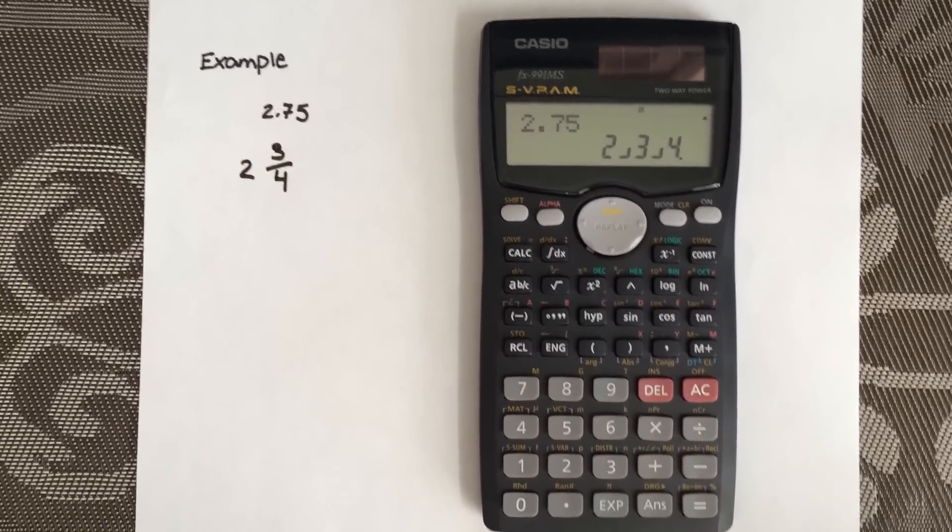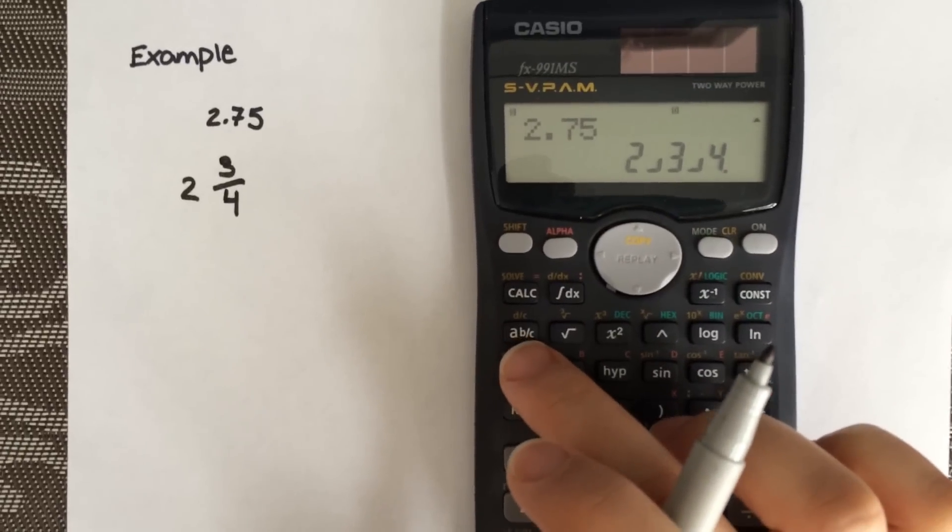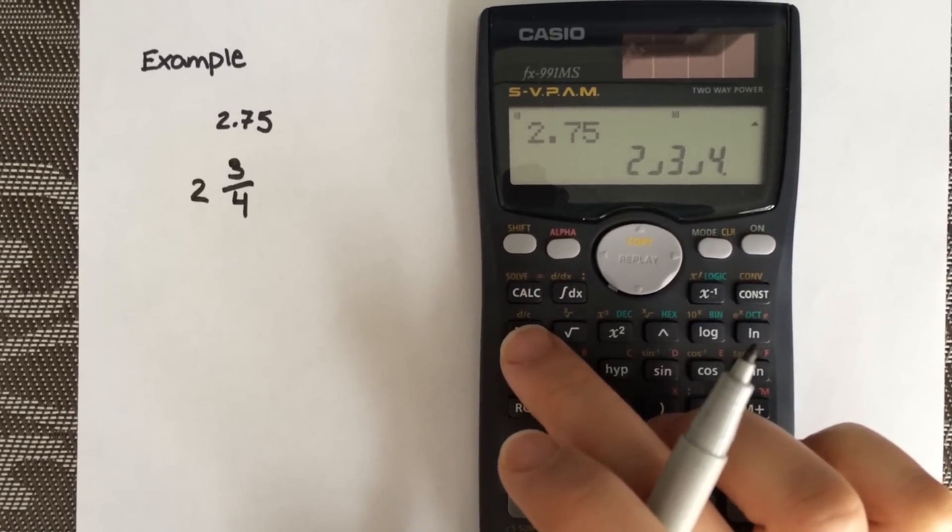Or if you want it as an improper fraction, just select shift and the same button there, AB over C, but the top is D over C.